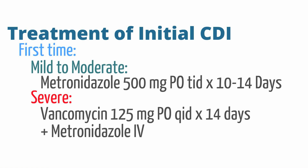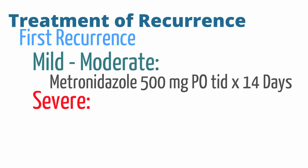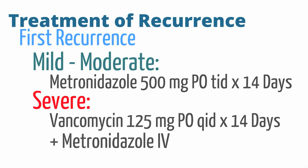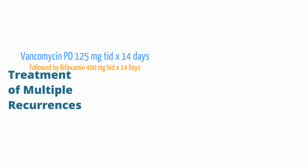TID is 3 times a day, QID is 4 times a day. For a severe recurrence, we must use vancomycin 125 mg PO QID times 14 days with IV metronidazole. For the second recurrence, we treat differently, usually with a vancomycin taper. For any further recurrences, consider vancomycin followed by rifaximin 400 mg BID, or twice a day, for 14 days.